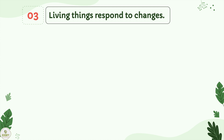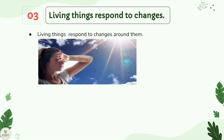Then, living things respond to changes. They respond to changes around them. As we can see in this picture, when bright light is shown into our eyes, our eyelids will shut immediately. Shutting our eyelids in bright light prevents too much light from entering our eyes and damaging them. The ability to respond to changes in our environment helps to protect us from danger and keeps us safe.